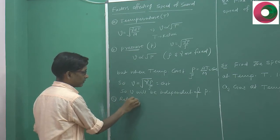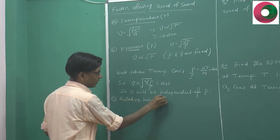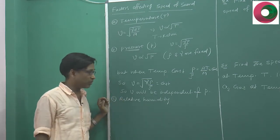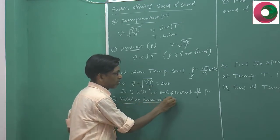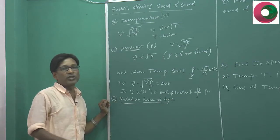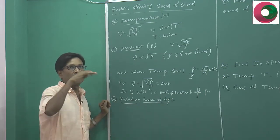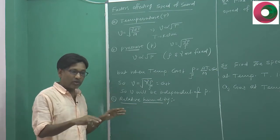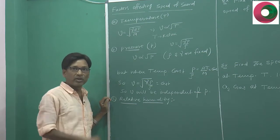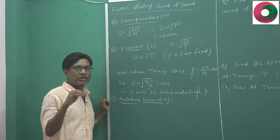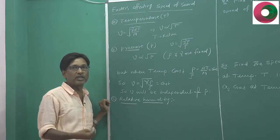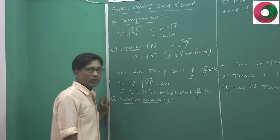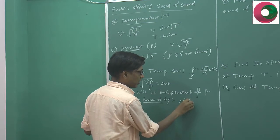The third factor is relative humidity. Humidity indicates the moisture content in air or any gaseous medium. Higher humidity means higher moisture content. If moisture content in the atmosphere is higher, the moisture sticks to the dust particles present in the medium. The dust particles become very heavy and settle down. This causes the density of the medium to decrease, and as density decreases, the speed of sound increases.